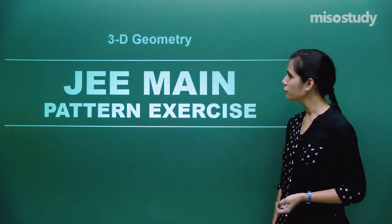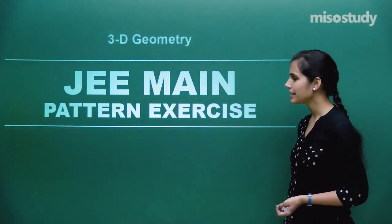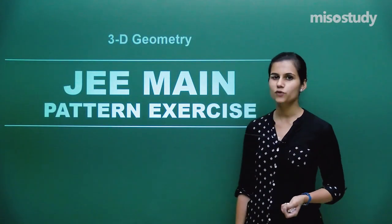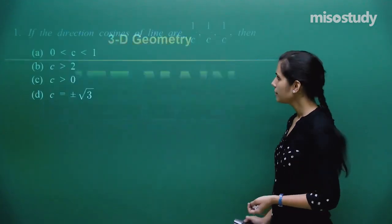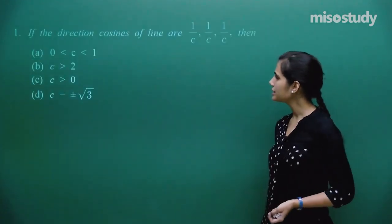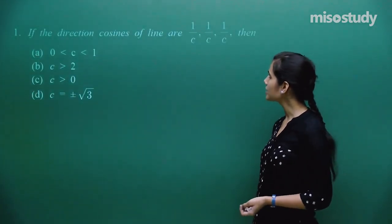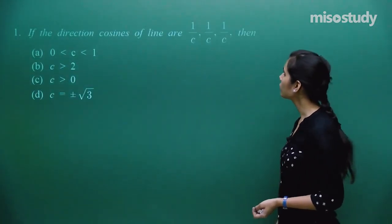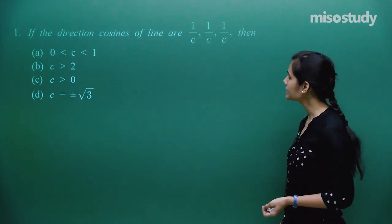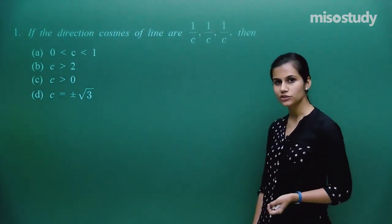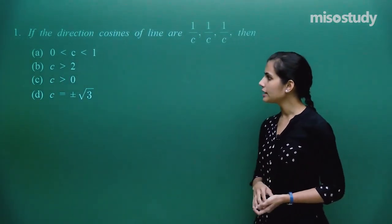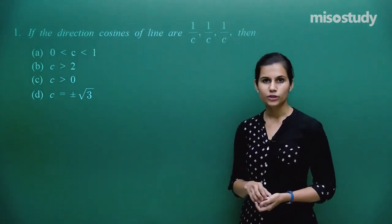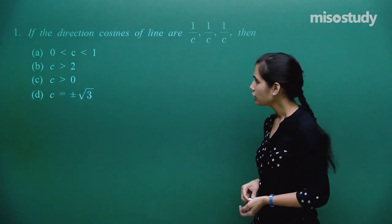Let us begin our discussion over the JEE Main pattern exercises for the 3D geometry chapter. The first question is: if the direction cosines of a line are 1/c, 1/c, 1/c each, then what condition does c follow?